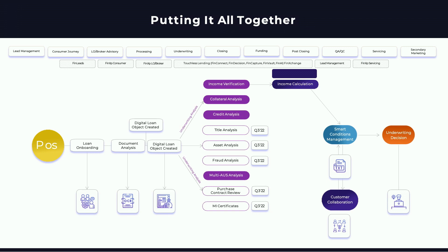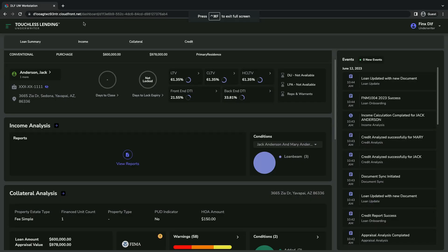Then validate the conditions — what is needed. You need to verify income, asset, credit, and collateral. All those things will be automated and verified, conditions will be created and satisfied, and then it is clear to close. Imagine all those things happening before the user even picks up the loan. Now let's see a live demonstration. This is the Touchless Lending platform, which will automatically underwrite the loan based on the milestone and the stage.